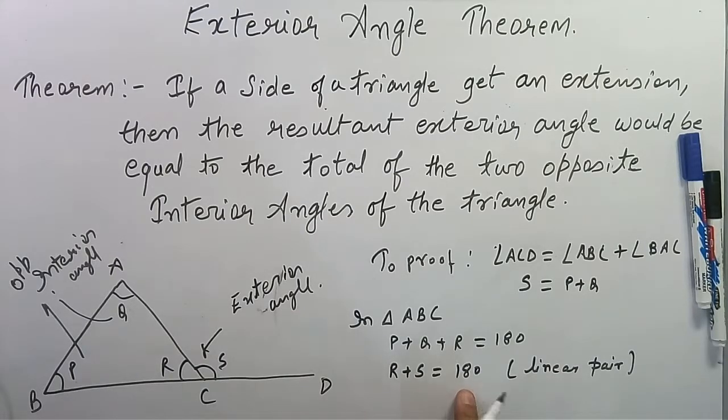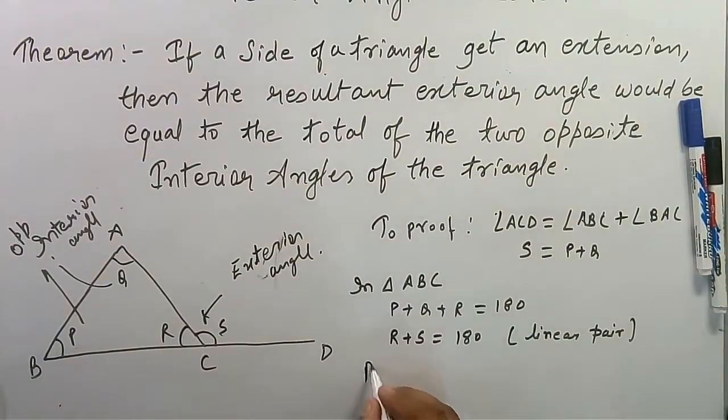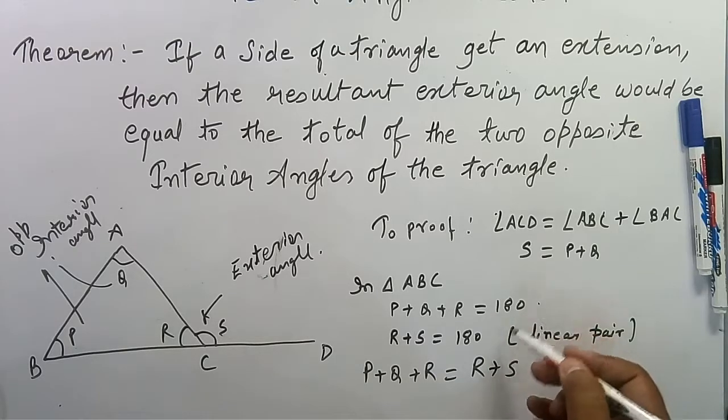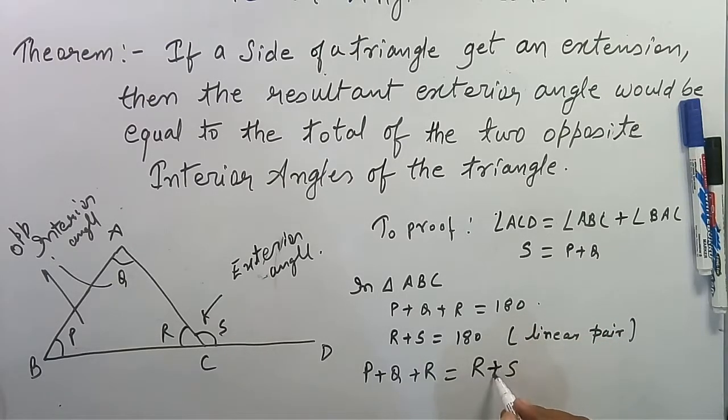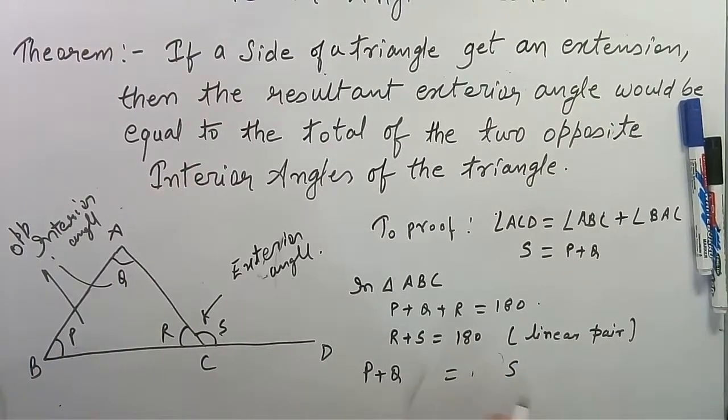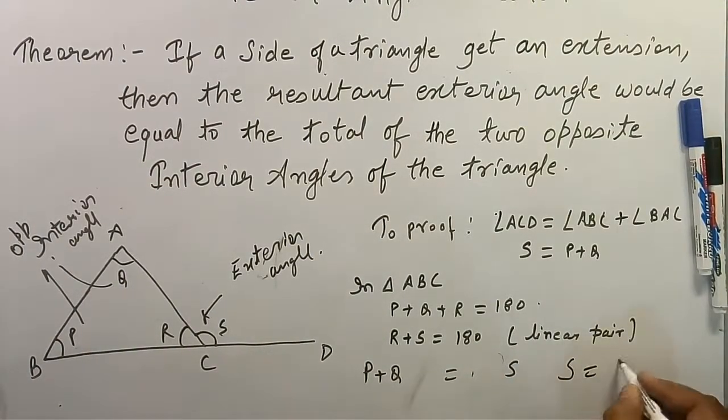Now, in place of 180 degrees, I am putting R + S. So P + Q + R = R + S, because the right-hand sides of both equations are the same. The R terms cancel, and we are left with P + Q = S, or S = P + Q.